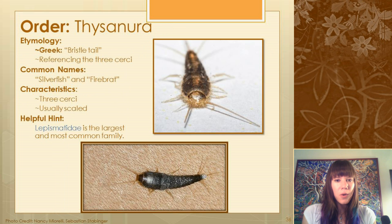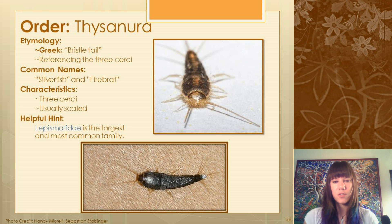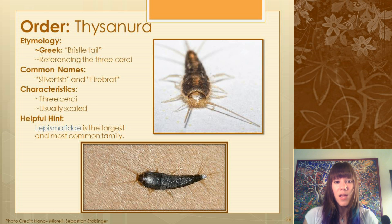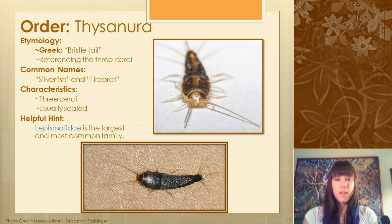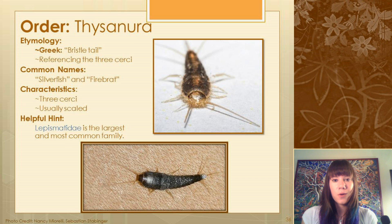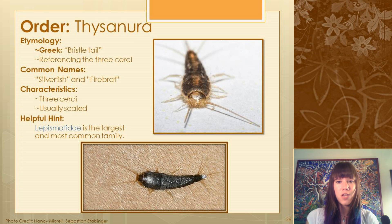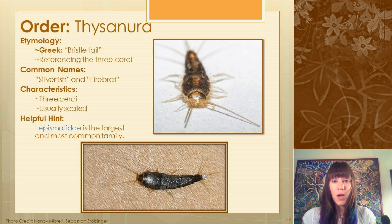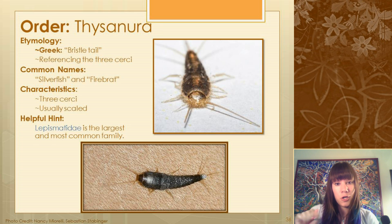The last group for today is order Thysanura. In Greek this means 'bristle tail,' referring to the three cerci at the end of the abdomen. Their common names are silverfish and firebrats, and their characteristics are those three cerci and a typically scaled body. You can usually find these in your bathroom, basement, or in really old buildings in drawers with old books and papers — because they eat old paper and starchy materials. The most common family is Lepismatidae, so finding one keys out both order and family at once.